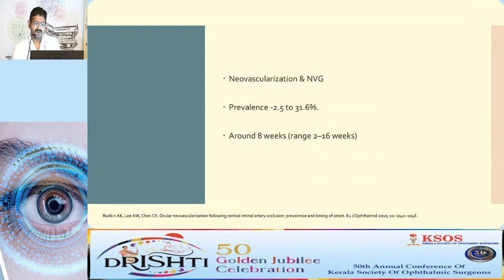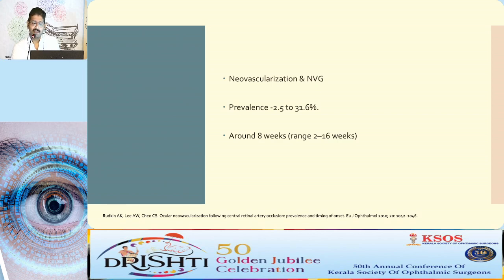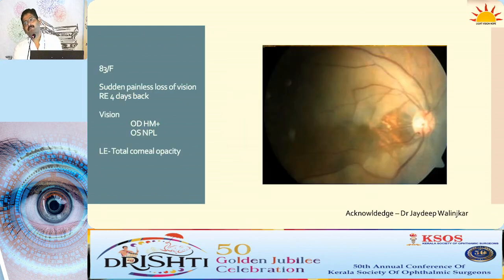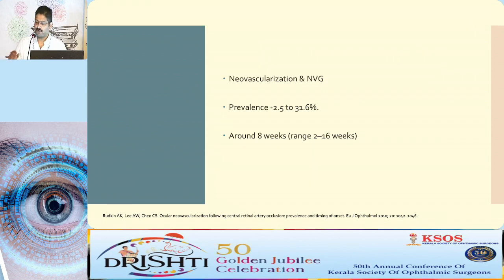Subacute management aims to prevent development of neovascularization and neovascular glaucoma. Literature reports neovascularization in 2.5 to 32% of CRAO cases. The typical time range for its development is 2 to 16 weeks. Unlike CRVO, the chance of neovascular glaucoma in CRAO is much lower. Ideally, patients should be monitored for neovascularization for up to four months.